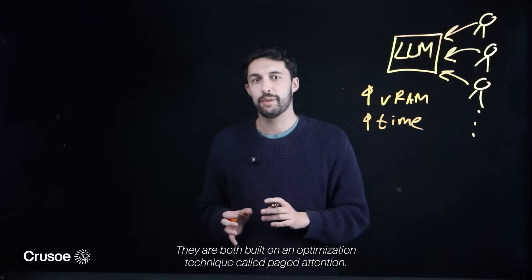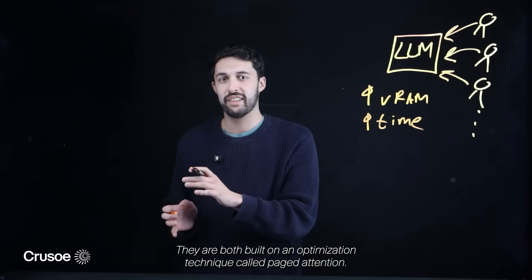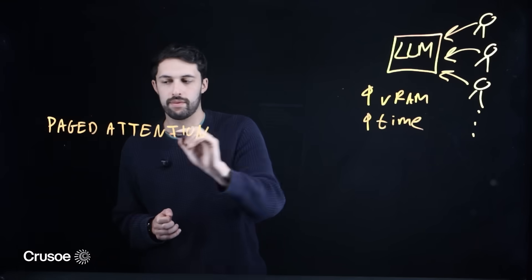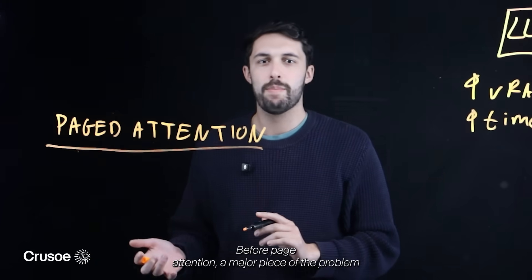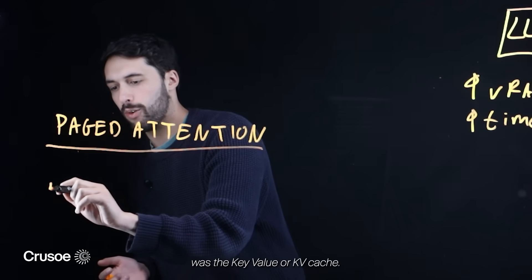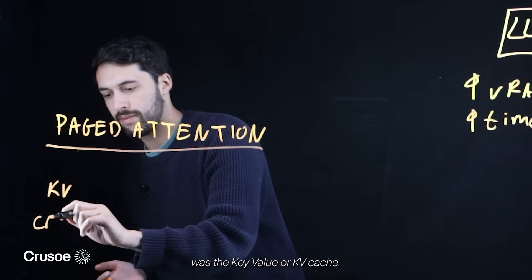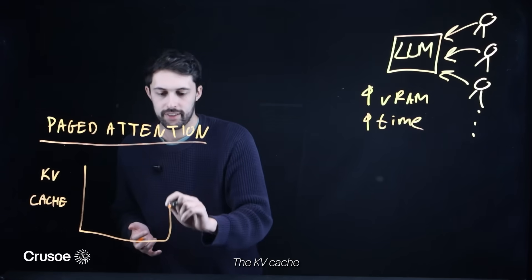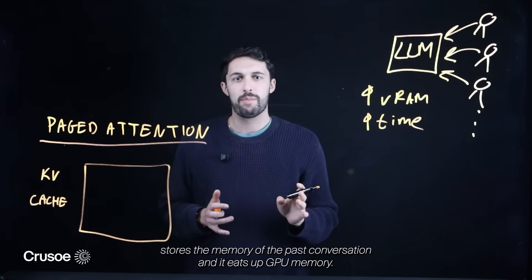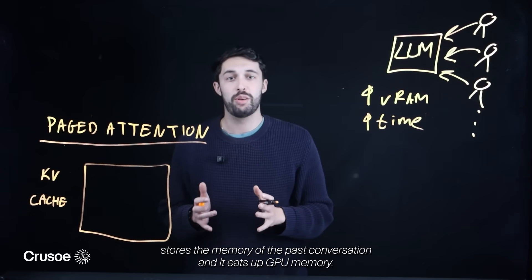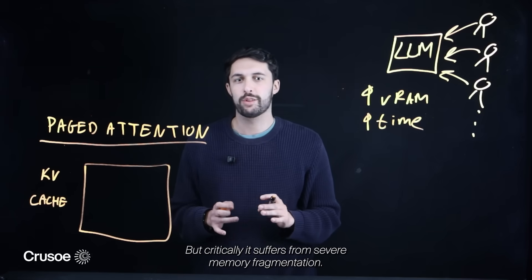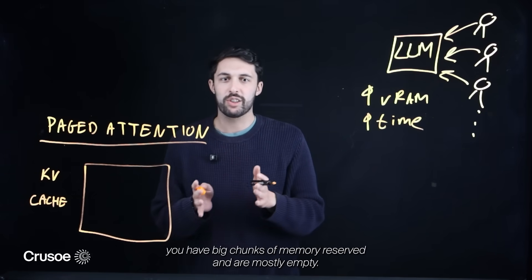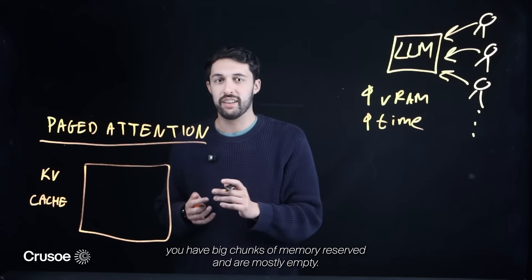They are both built on an optimization technique called paged attention, and that's what we're here to talk about today. Before paged attention, a major piece of the problem was the key value or KV cache. The KV cache stores the memory of the past conversation and it eats up GPU memory. But critically, it suffers from severe memory fragmentation. Requests of different lengths mean you have big chunks of memory reserved that are mostly empty.